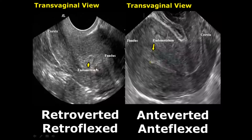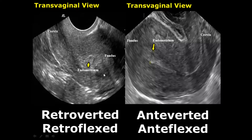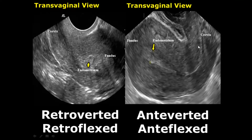In a retroverted and retroflexed uterus, the cervix is tilted posteriorly and the body of the uterus is also facing posteriorly. The bladder will be appearing on the left side of the image. The cervix is not very clear in this image, so we can use a combination of transabdominal and transvaginal views to determine the actual location of the uterus.